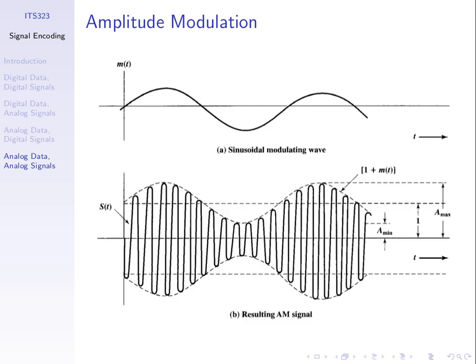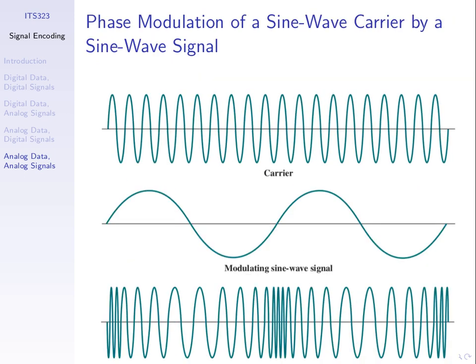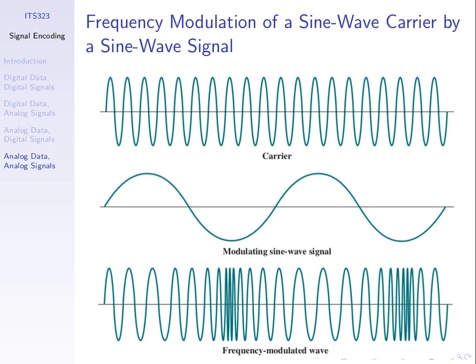Phase modulation modifies the phase of the carrier depending on the input data, and it produces a similar result to frequency modulation. With frequency modulation, we vary the frequency of the output signal: when input data has high amplitude, we get low frequency output; with negative amplitude, high frequency output. Frequency modulation and amplitude modulation are the main ones in use — AM and FM radio.